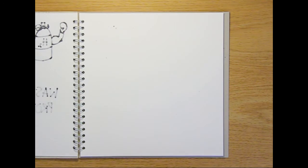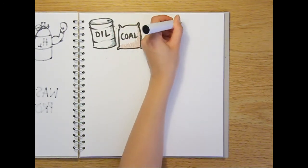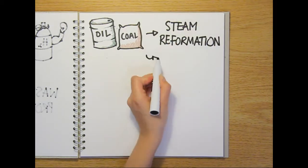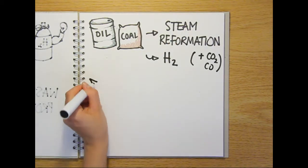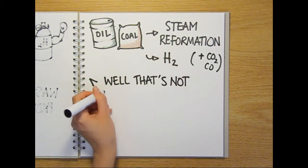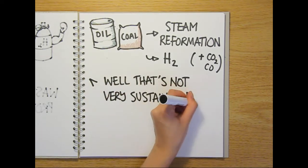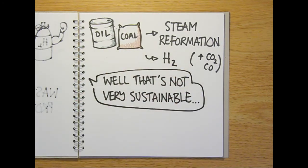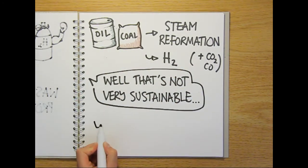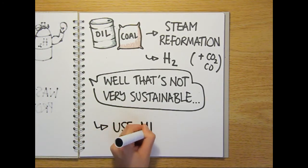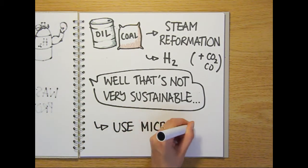But until recently, the only way of producing hydrogen was steam reformation where fossil fuels are heated with steam under high pressure. This is obviously not a renewable source of hydrogen and it doesn't reduce our reliance on fossil fuels. So instead, scientists are working on ways to get microbes to make hydrogen for us and there are currently three main methods.